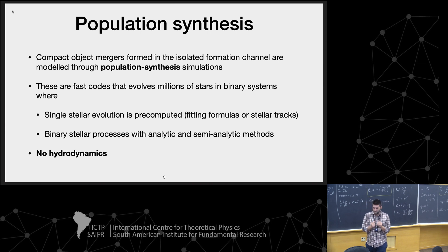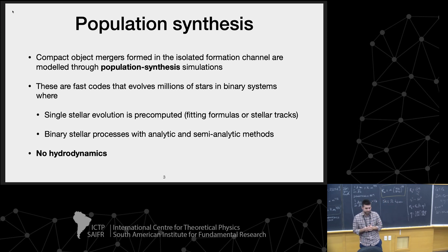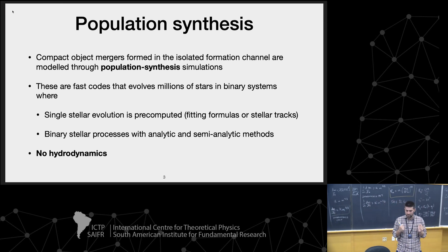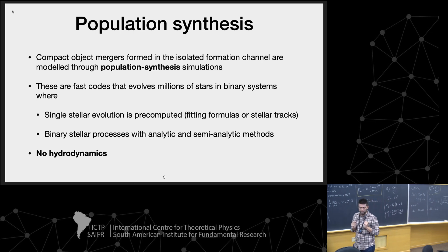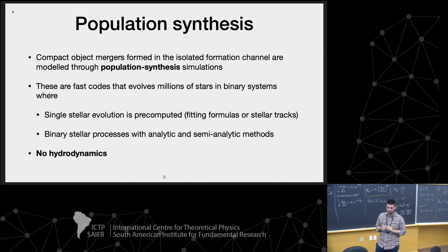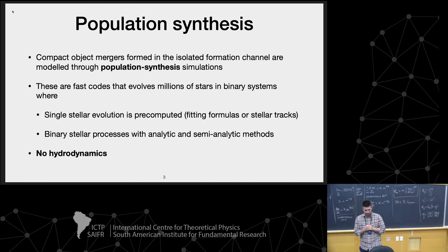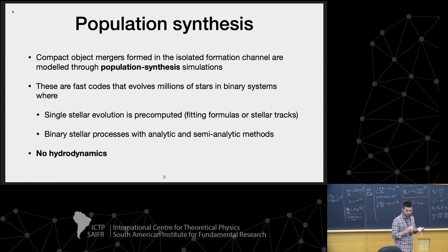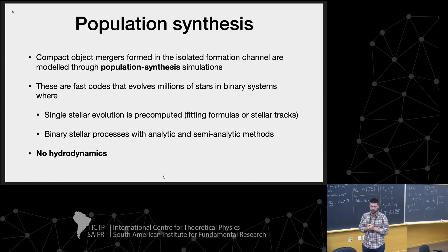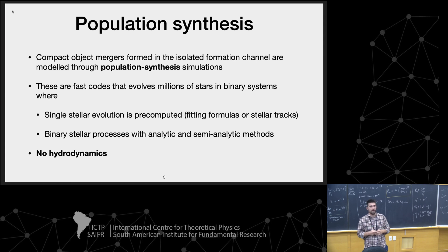These are fast codes that can evolve hundreds of millions of binaries in a few hours. The way we can do that is because stellar evolution is pre-computed either with fitting formulas or with stellar tracks. Binary stellar processes are implemented with analytic or semi-analytic methods — for example, the alpha-lambda formalism for the common envelope. In a nutshell, no hydrodynamics. This is what allows us to evolve quickly these millions of binary systems.